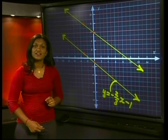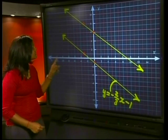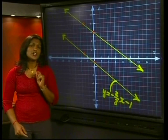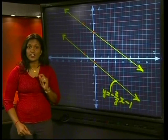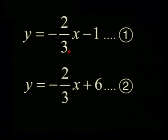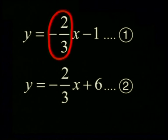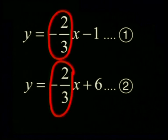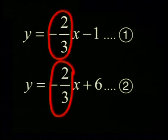Wait a minute. Something is strange here, isn't it? These lines seem to be parallel. But how can we be sure? Look at the equations. Did you notice that both the gradients are the same? Do you see that they are both negative two divided by three?